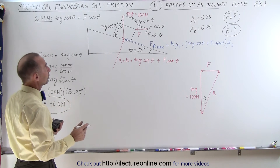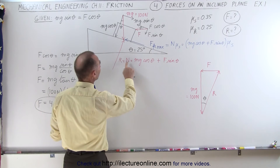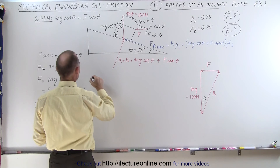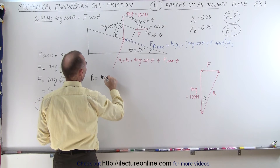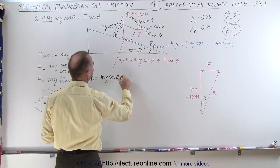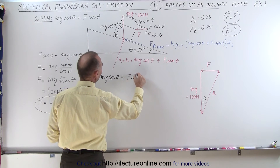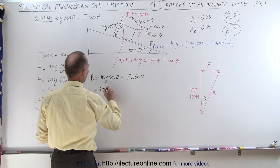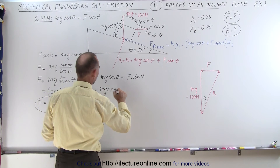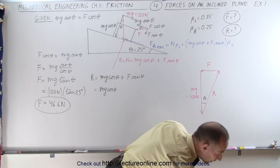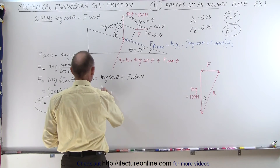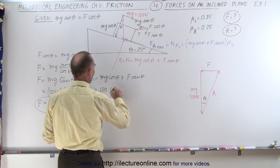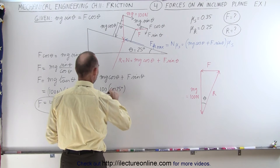Now for the reaction force. The reaction force R equals the normal force, which equals Mg cosine theta plus F sine theta. So R equals Mg cosine theta plus F times the sine of theta. Now that we know F, let us plug in the values: this will be 100 times the cosine of 25 degrees — that is 100 Newtons — plus 46.6 Newtons times the sine of 25 degrees.